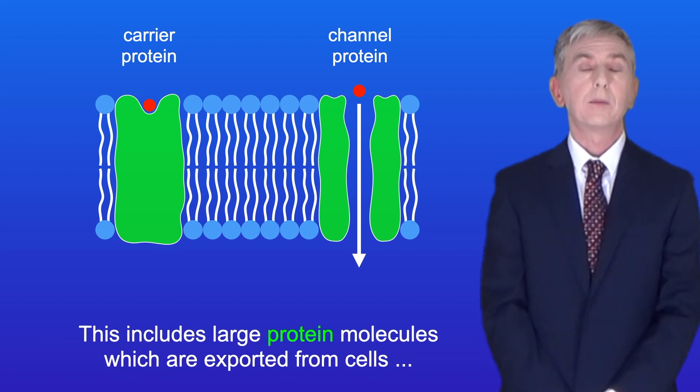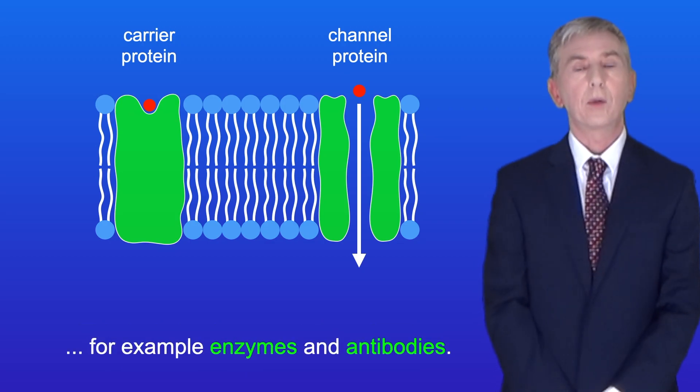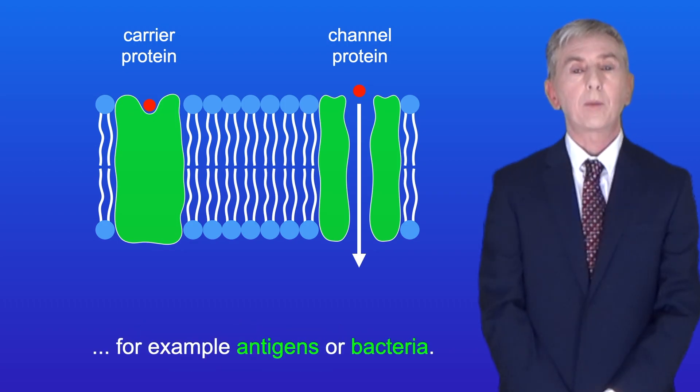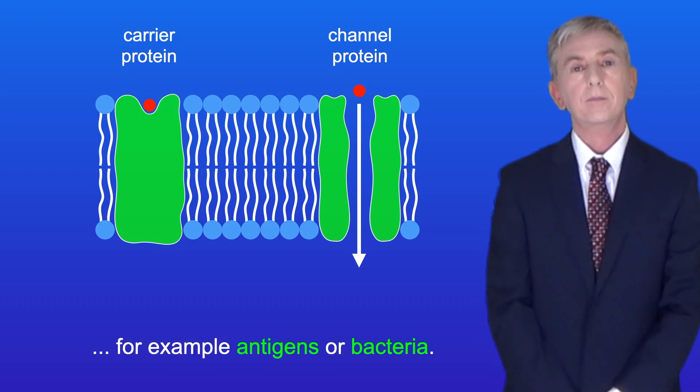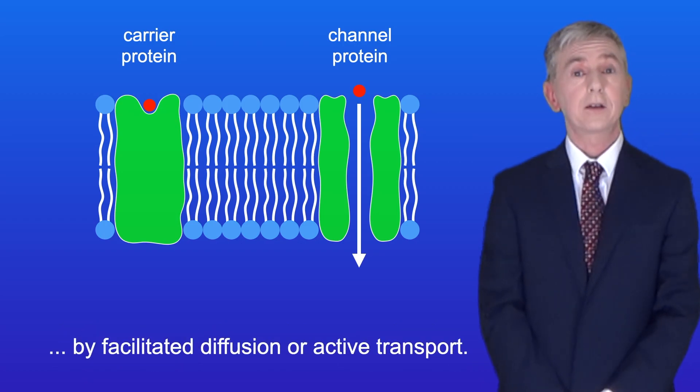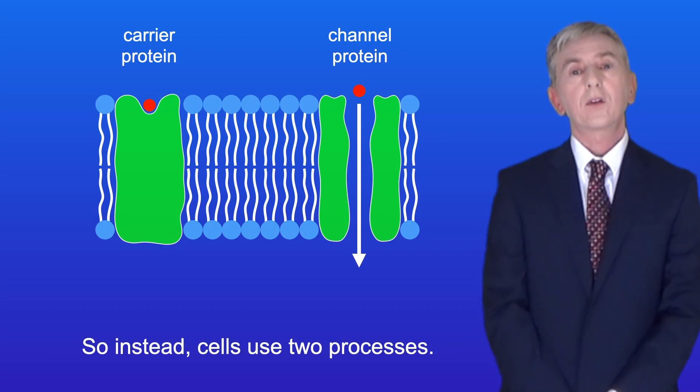This includes large protein molecules which are exported from cells, for example enzymes and antibodies. Large particles can also pass into cells, for example antigens or bacteria. In all of these cases, the particles or molecules are too large to cross the cell membrane by facilitated diffusion or active transport. So instead, cells use two processes.